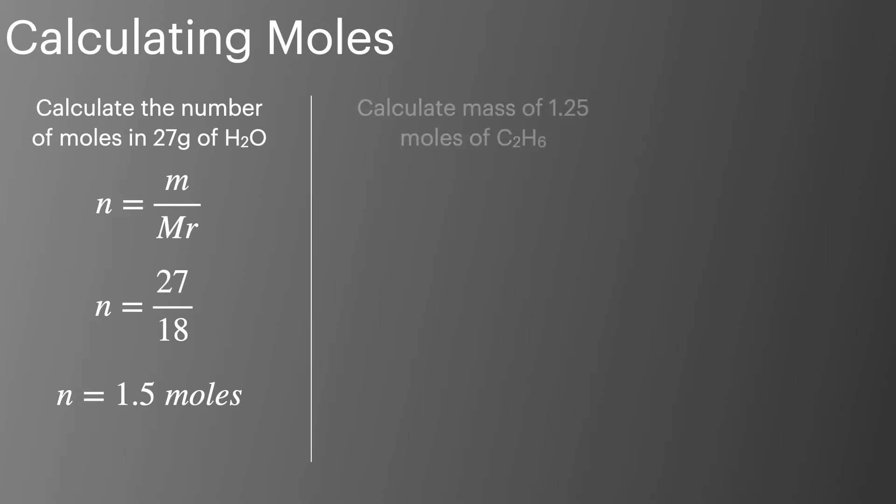In our second example, we're asked to calculate the mass of 1.25 moles of C2H6. We'll start off by looking at our equation m equals n times Mr. We'll substitute in our values, 1.25 moles and 30, which is the Mr of C2H6, to arrive at an answer of 37.5 grams.